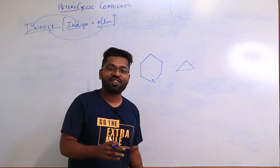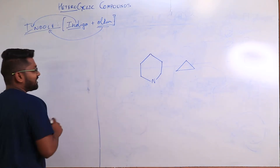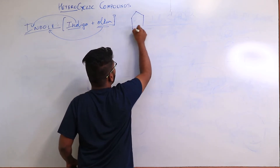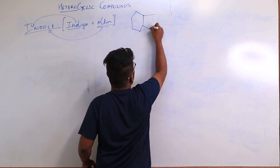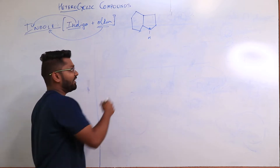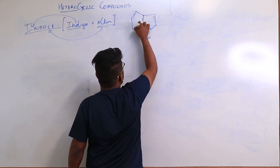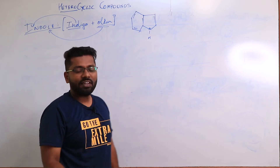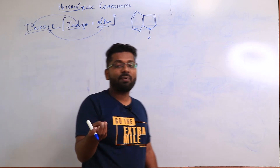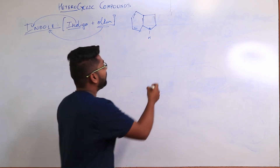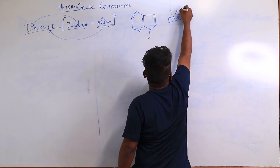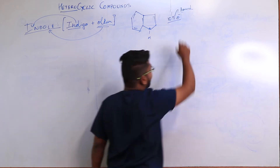Now let me draw the structure of indole. The indole structure is a fused structure consisting of a benzene ring and a pyrrole ring. Pyrrole is five-membered and its heteroatom is nitrogen. This gives conjugation — and if we are getting conjugation, it means it is aromatic. If it is aromatic, it has to satisfy the electron rule, so it satisfies the 10 π electron rule and hence is aromatic.